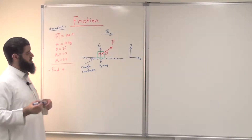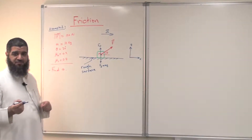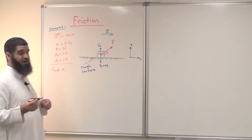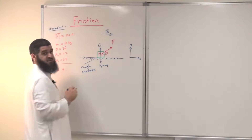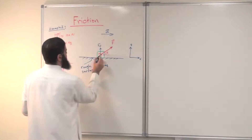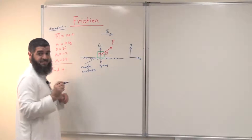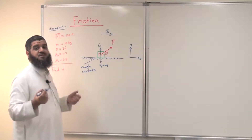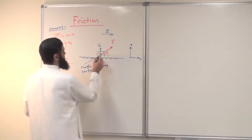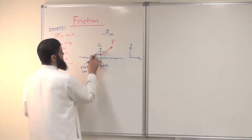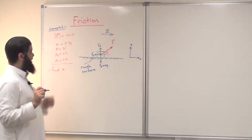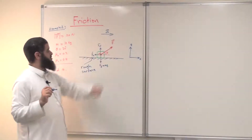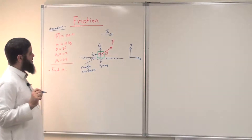The friction force will be opposite to the direction of motion. Since the motion is to the right, the friction force will be to the left. It is fk — the kinetic friction — because the object is moving, so I use the kinetic friction force fk. The acceleration is along the positive x direction.